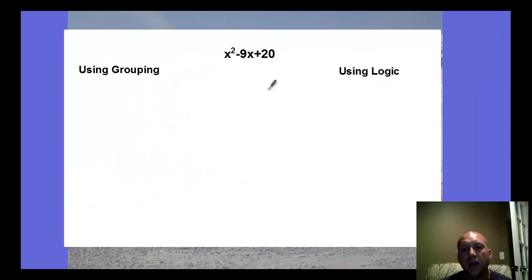We can use that same logic when we're factoring trinomials. This doesn't have four terms in it, but with a simple trick, we can make it have four terms. We're looking for numbers that multiply to be 20 but add to be negative 9. So we're looking at like a negative 5 times a negative 4. Those multiply to be 20 but add to be negative 9.